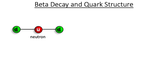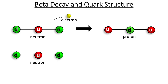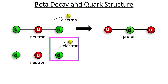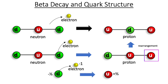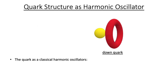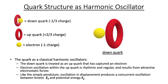Beta decay may provide a clue to quark structure. In this example, a neutron spontaneously emits a beta particle or high-speed electron to produce a proton. Perhaps it's not the entire neutron that emits the electron — perhaps it's just one of its down quarks, which then becomes an up quark. This would mean that the structures of the down quark and up quark are similar, but differ by the presence or absence of an electron. Here is an artist's rendition of the quark as a classical harmonic oscillator: a yellow sphere is an electron, a red ring is an up quark, and the down quark is shown as an up quark that has captured an electron. This structure satisfies the conjecture from beta decay that an up quark and down quark may differ by the presence or absence of an electron.